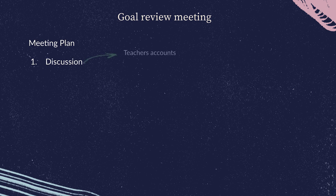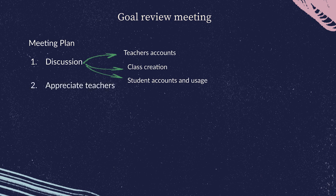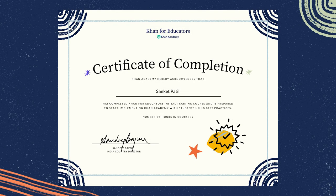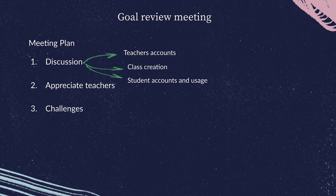Discussion points could cover teacher account creation, classroom creation, student accounts, and student usage. During the meeting, use the data to highlight progress made towards each goal. For teachers who've met their goals or shown good improvement, appreciate their efforts with certificates and ask them to share the strategies they're using — then encourage others to apply these strategies. Use the meeting to discuss challenges faced by teachers who are lagging, conduct problem-solving conversations, and encourage them to try strategies adopted by successful teachers. Also note any issues related to infrastructure or timetable arrangements and speak to principals or concerned officials about them.